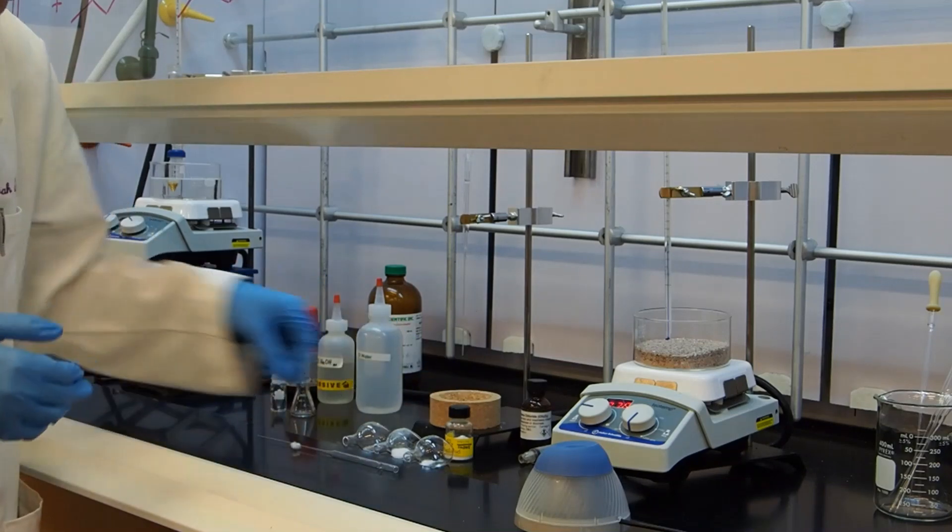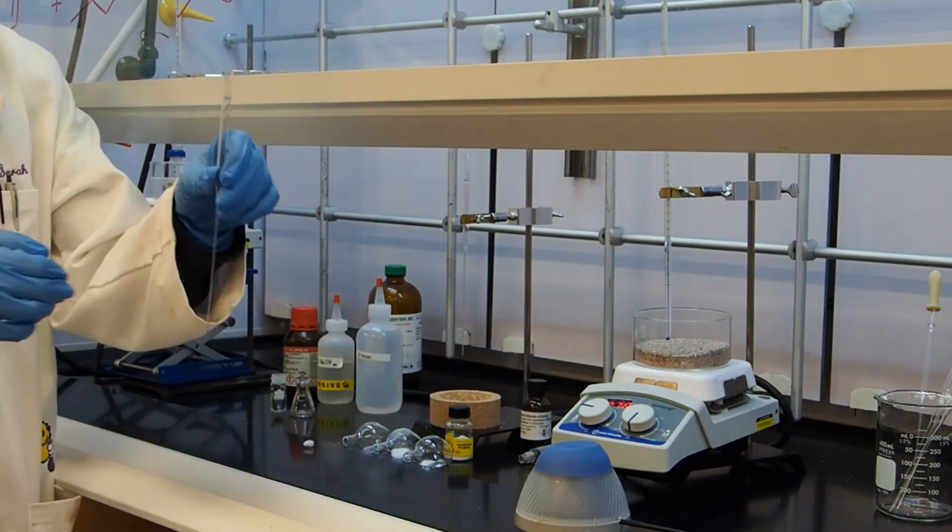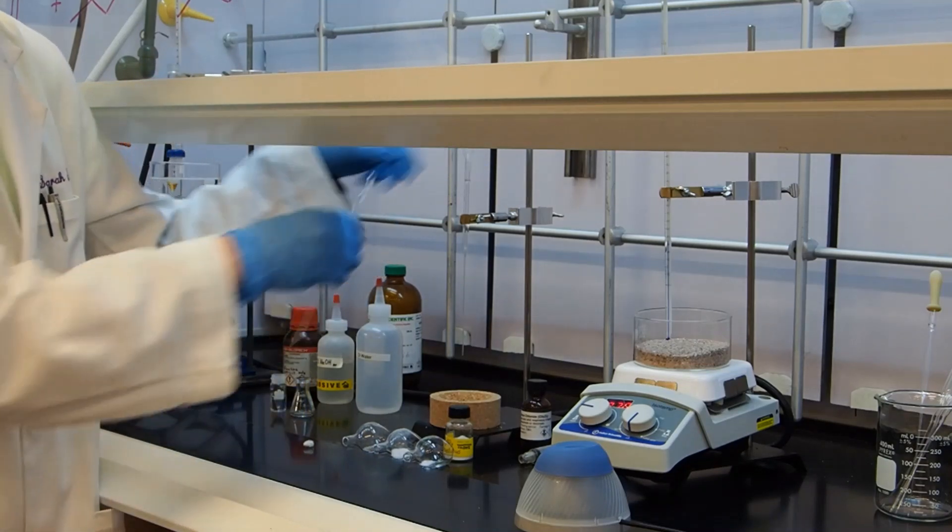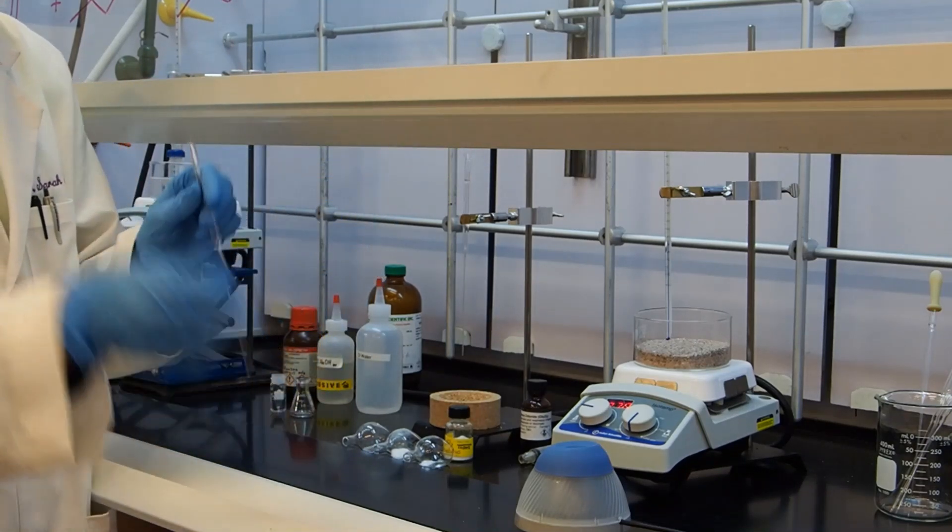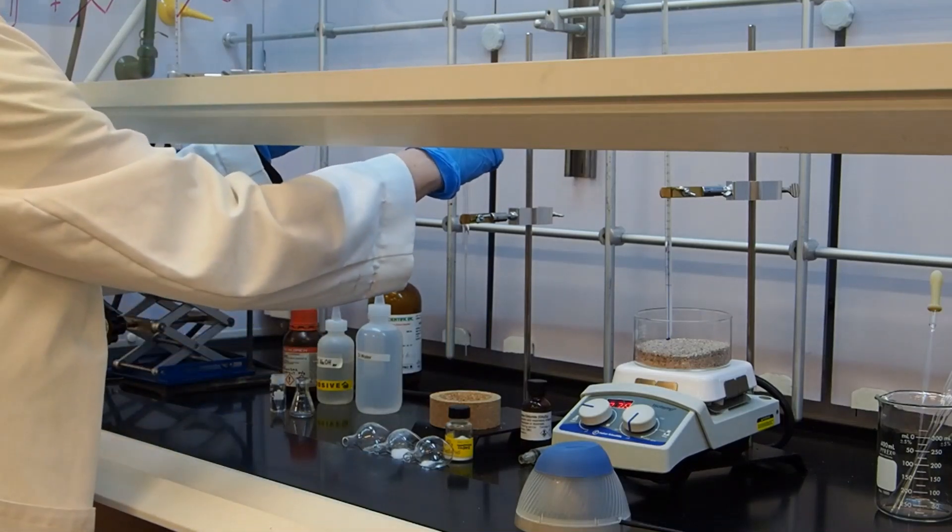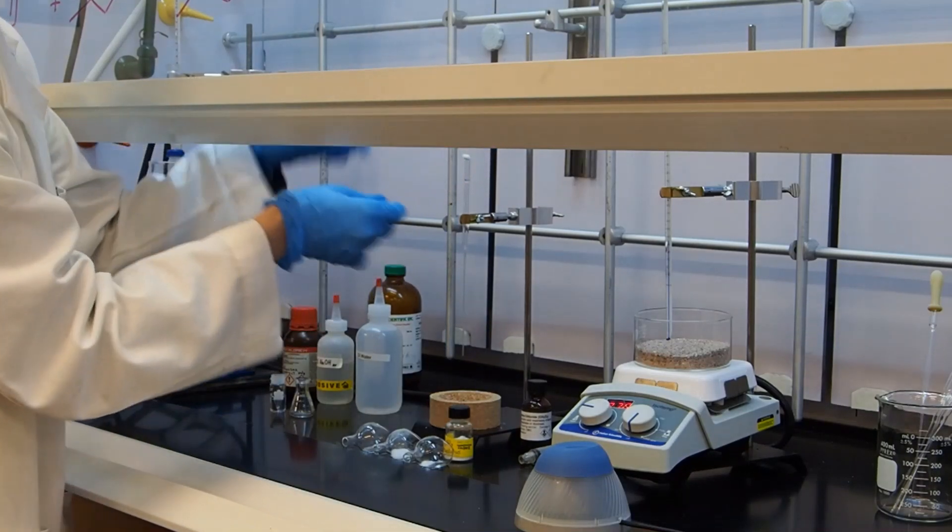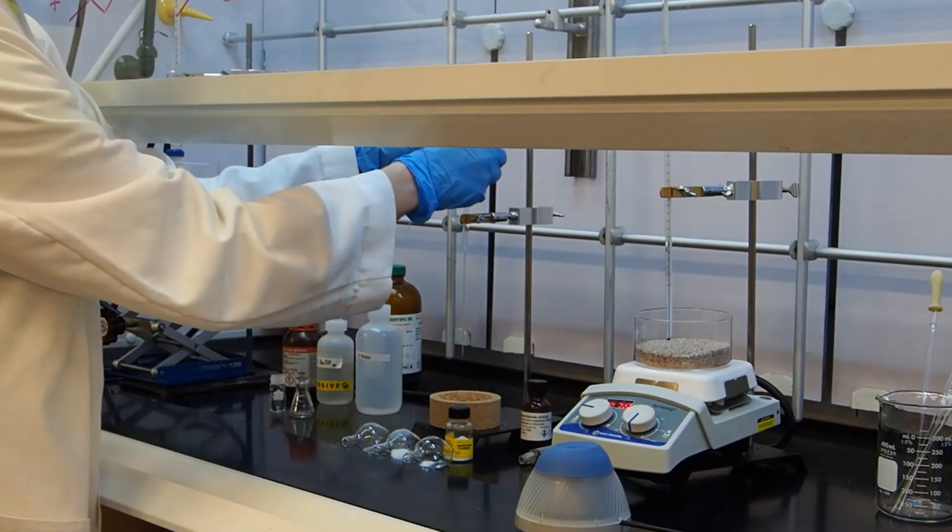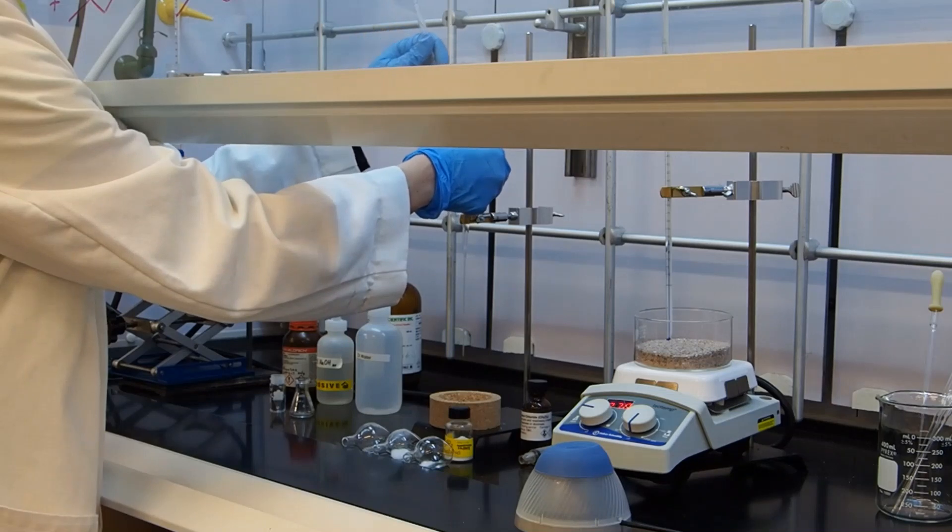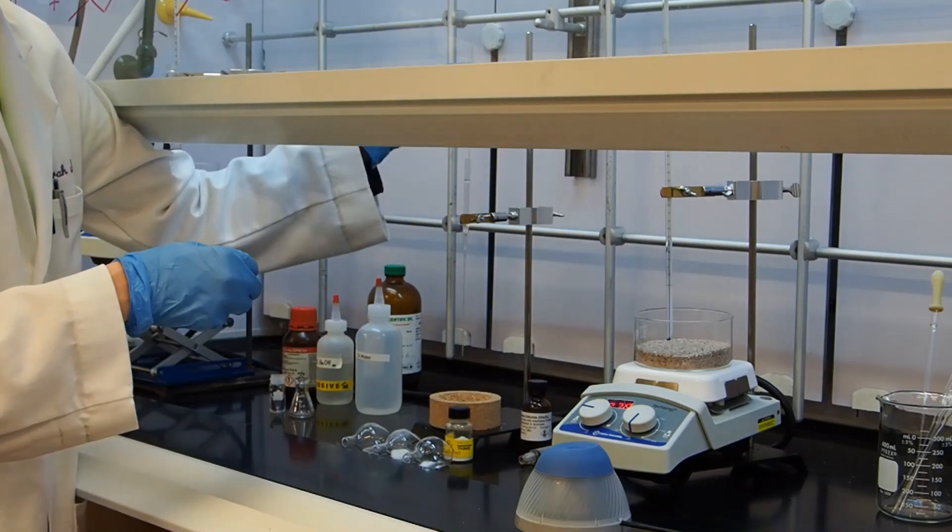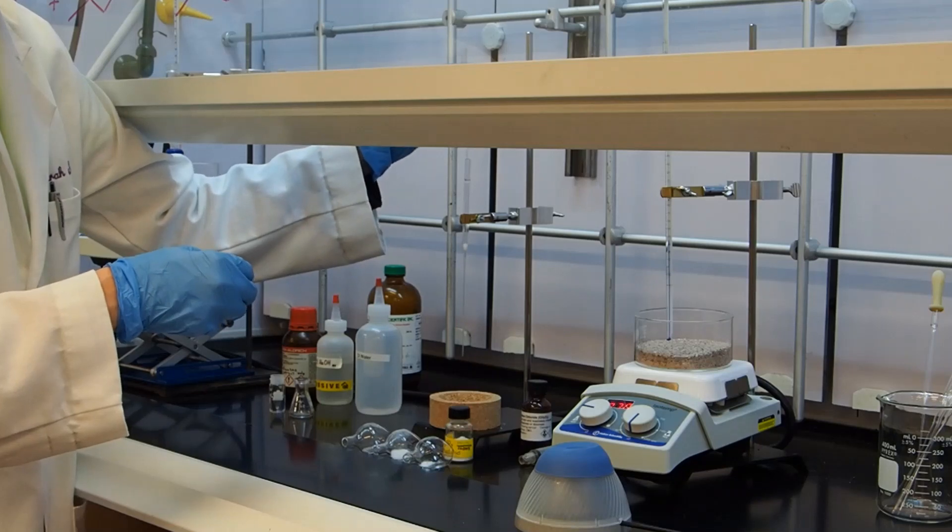This is going to be my micro scale chromatography column. I have a tiny piece of cotton. I'm going to use this pipette to place the cotton into the column and gently stuff it down in there. I'm going to be very gentle. You don't want to jam it in there too tightly.